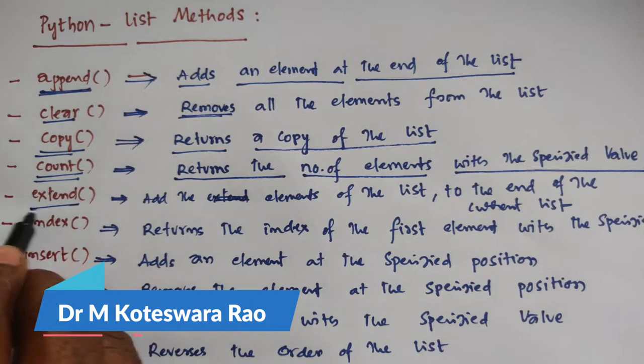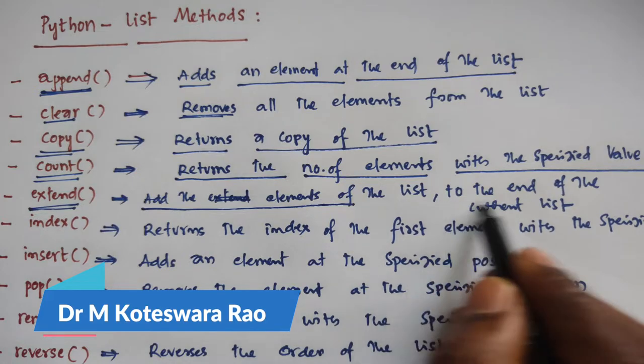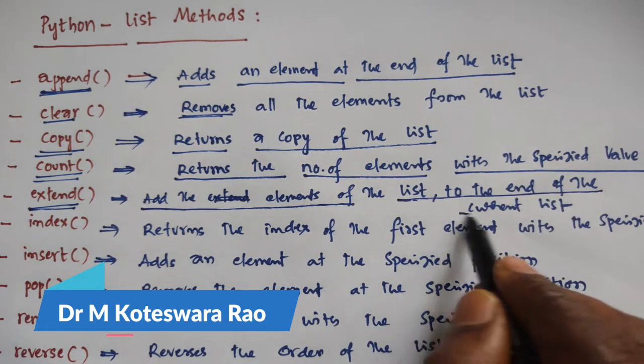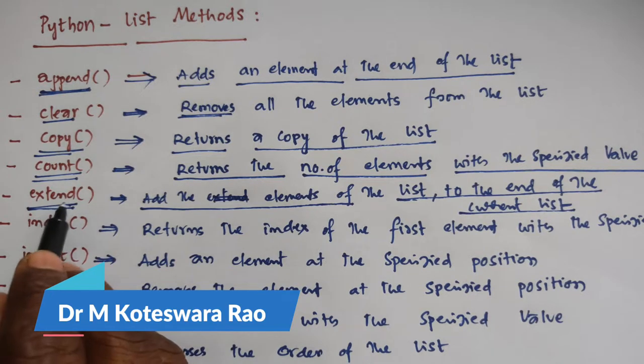Next one is extend. Extend adds the elements of a list to the end of the current list, at the end of the current list. That is, with extend, whatever values you have.